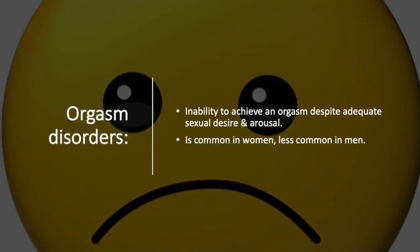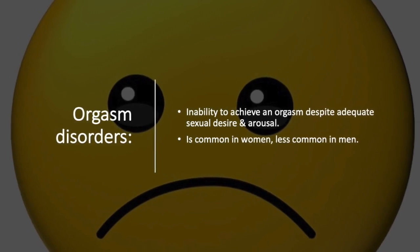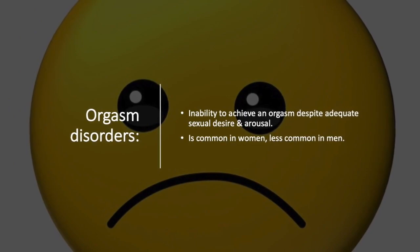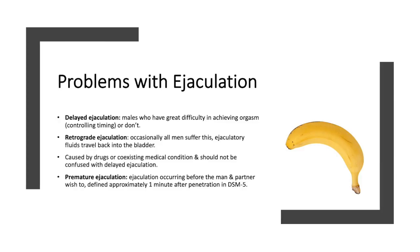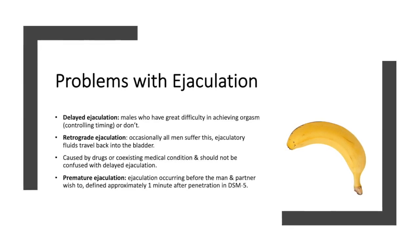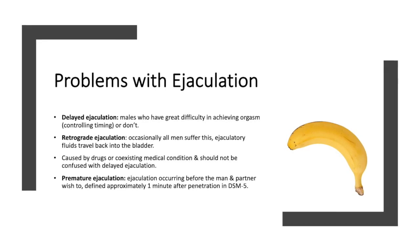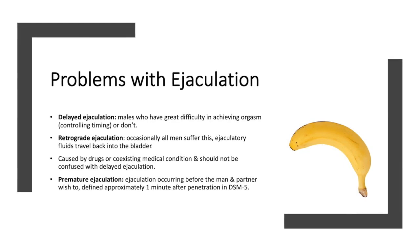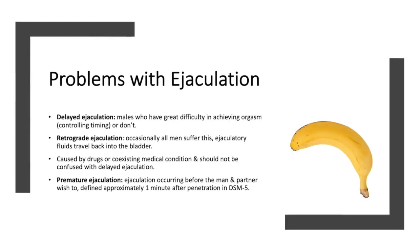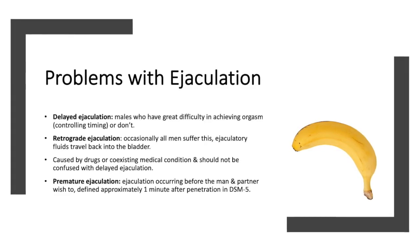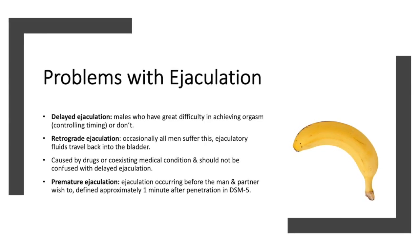Orgasm disorders are the inability to achieve an orgasm despite adequate sexual desire and arousal. They are common in women and less common in men. Delayed ejaculation is when males have great difficulty achieving orgasm, have problems controlling the timing of ejaculation, or simply don't ejaculate at all. Retrograde ejaculation occasionally occurs whereby ejaculatory fluids travel back into the bladder.